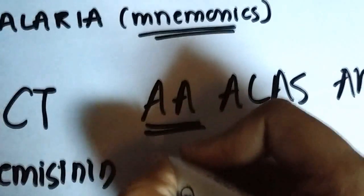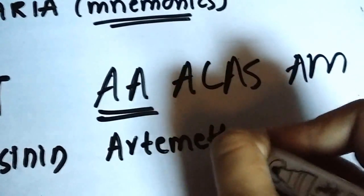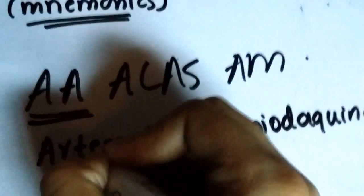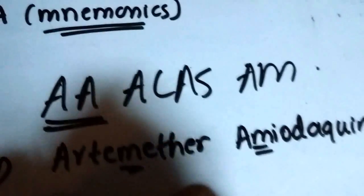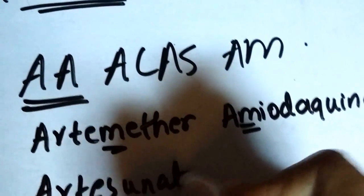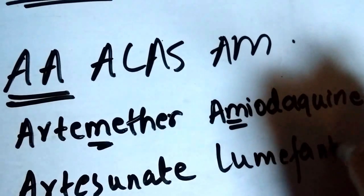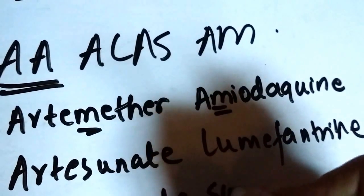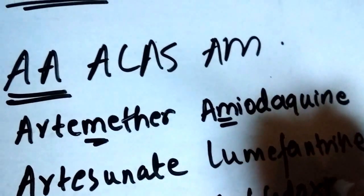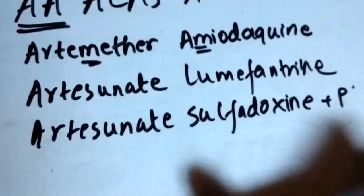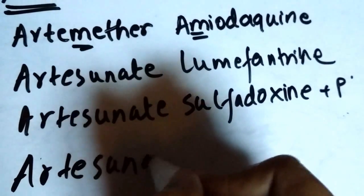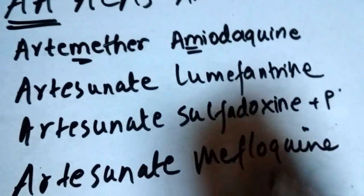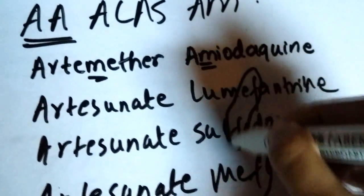AA stands for artimeter and amodiaquine. Both have an M, so they kind of fit in with each other. Then you have artesunate with lumefantrine, and you have artesunate with sulfadoxine and pyrimethamine. Obviously they always go together. And you have artesunate with mefloquine. I spoke about those in the prophylaxis of malaria, and you kind of see how there is an F in all of these three drugs.